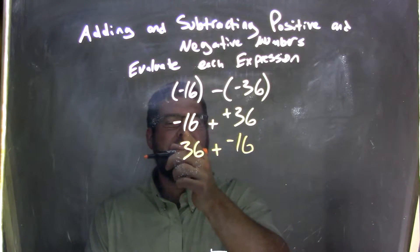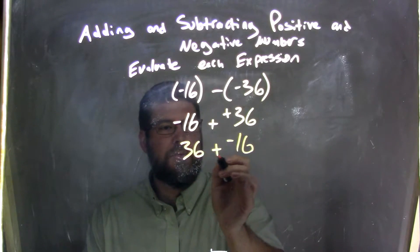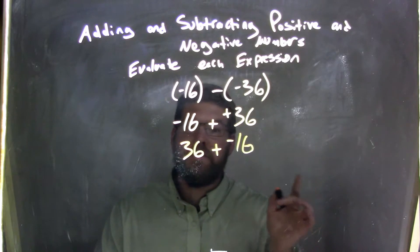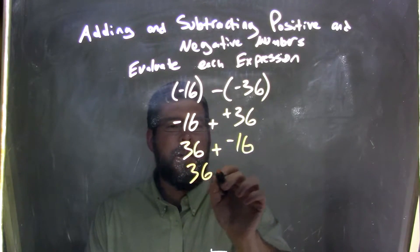So instead of writing negative 16 plus a positive 36, we have positive 36 plus a negative 16. Well, adding a negative is the same thing as subtraction. So we have 36 minus 16.